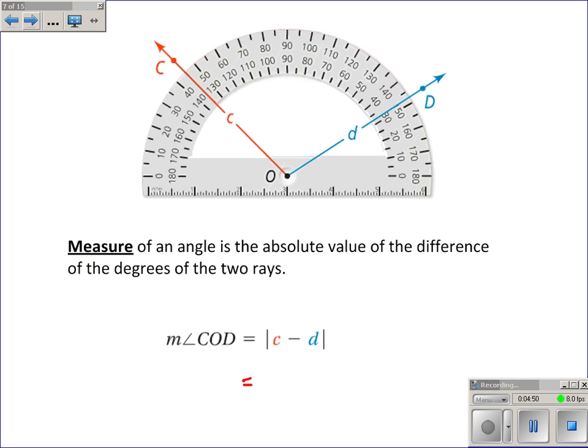The measure of ray C can use either the outside or the inside. It doesn't really matter, but one is usually easier. In this case, I'm doing C minus D, so I'm going to use the bigger number to avoid using negatives. I will take 135 minus, now I use the inside on C, so I'll use the inside on D, and it looks like it's about 32. So the measure of angle COD is the absolute value of 103, which is equal to 103 degrees.